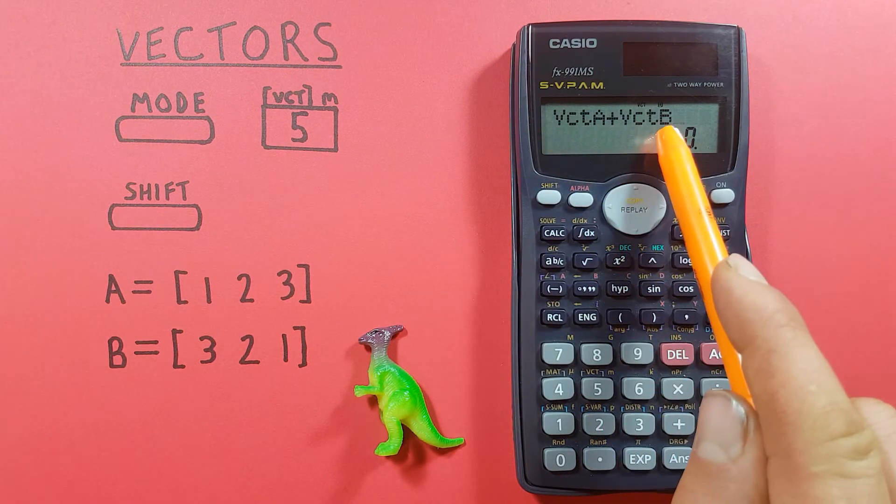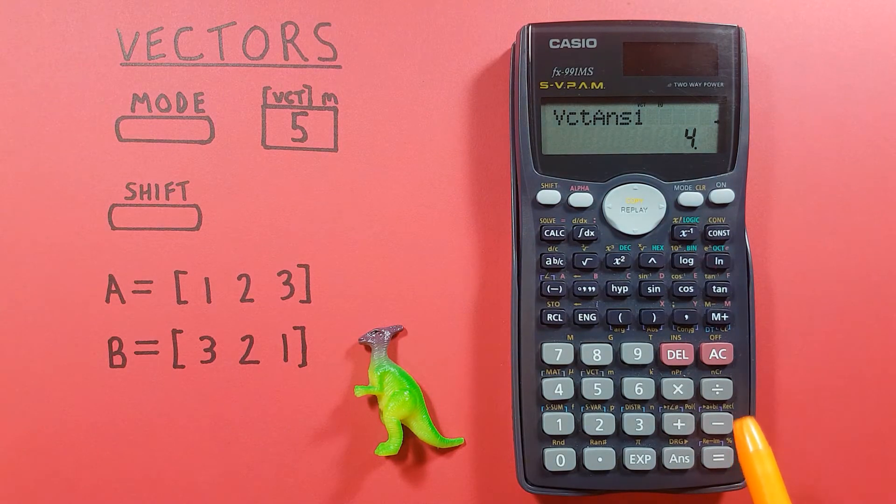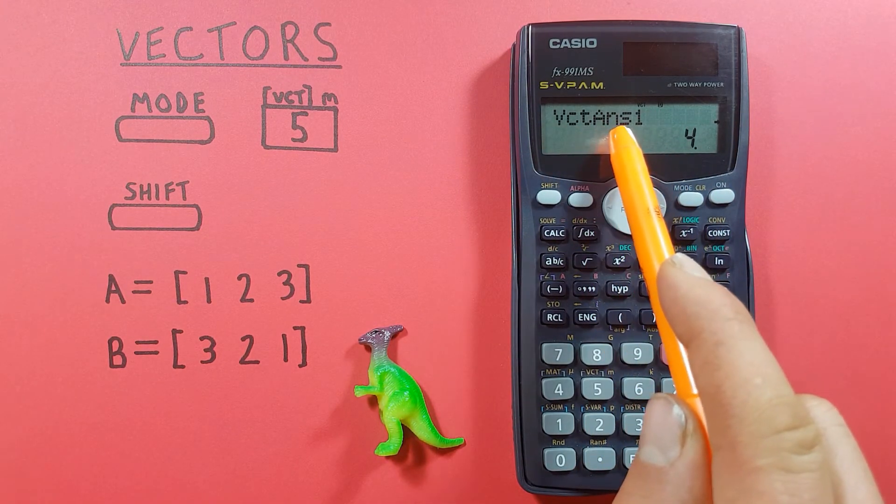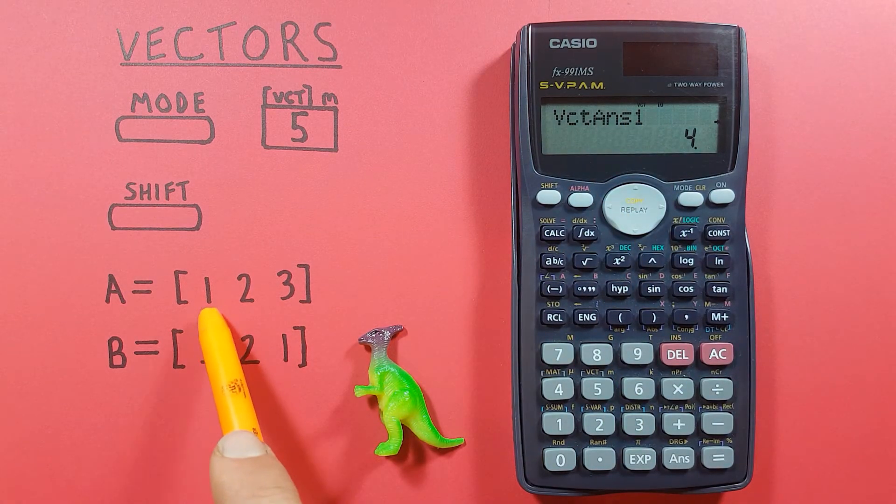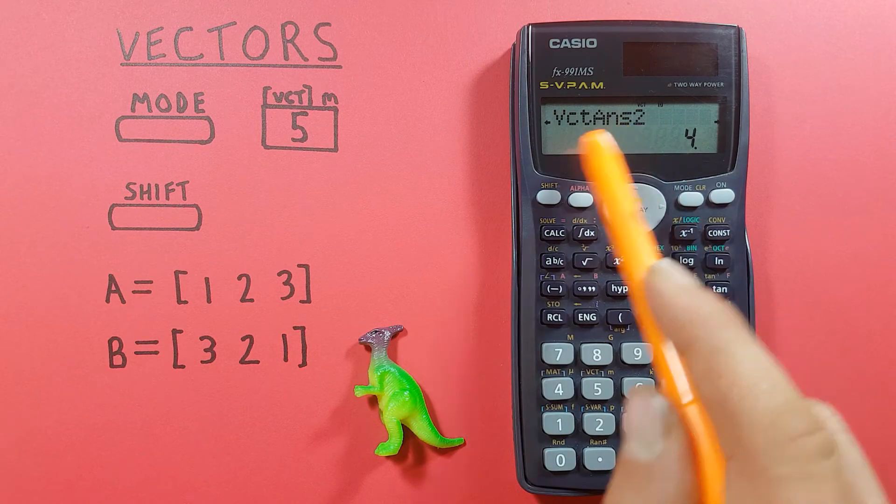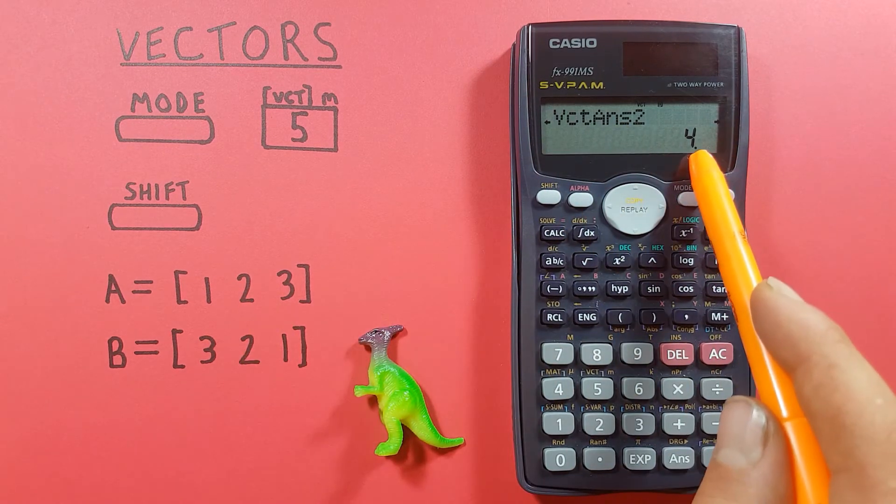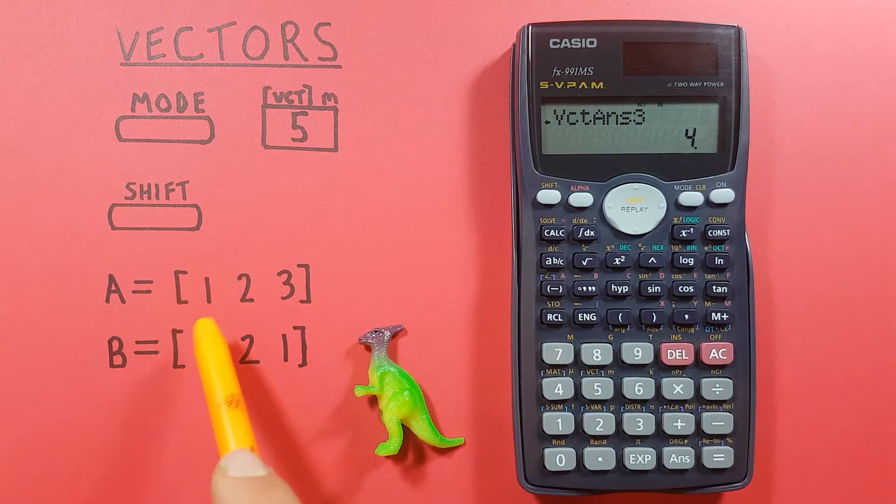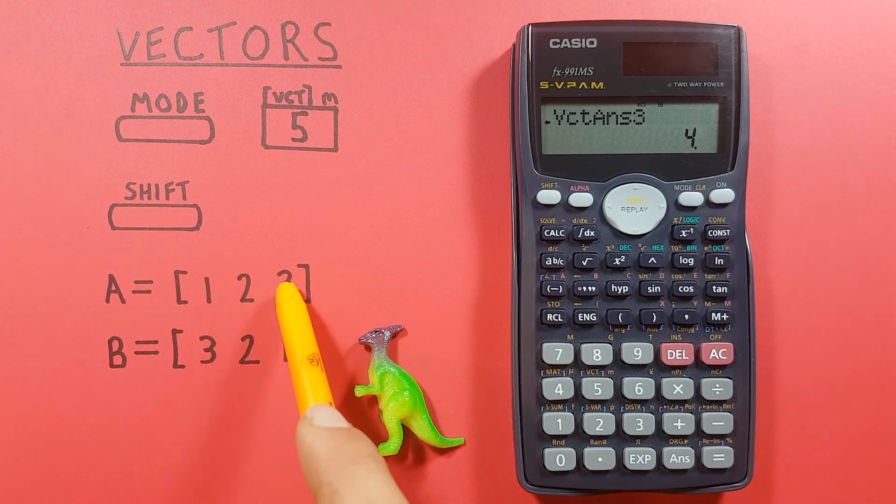There you go, vector A plus vector B equals, and here it gives us our first answer so that would be this slot here of 4. Our second slot is 4 and our third slot is also 4, which makes sense if you look at our original vectors.